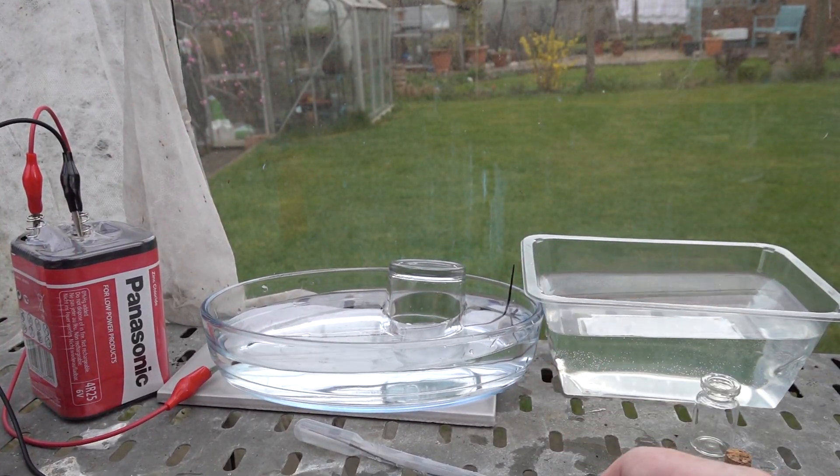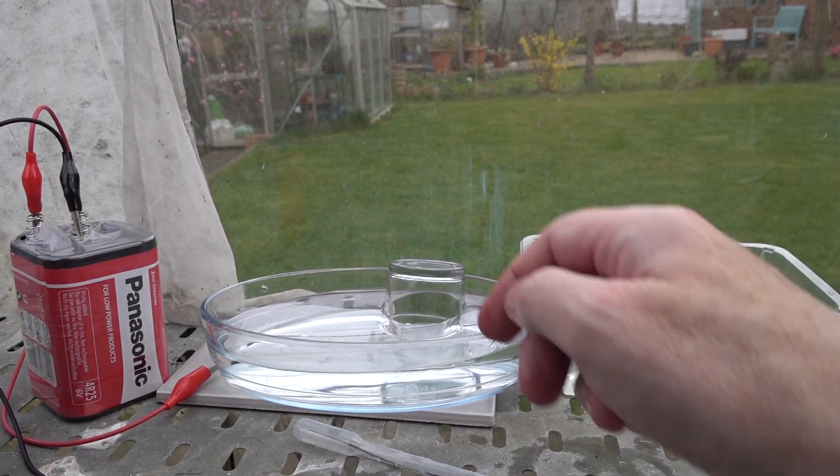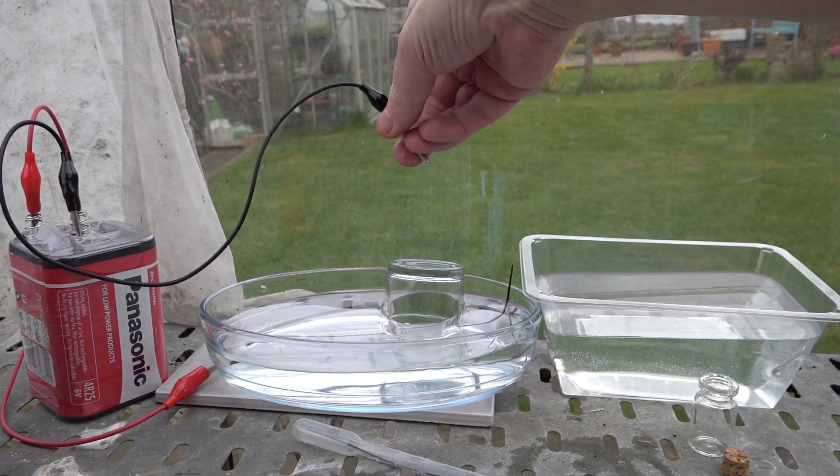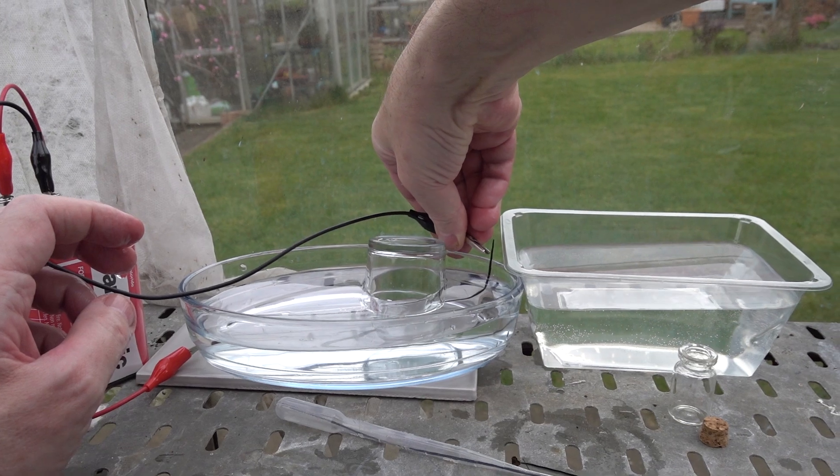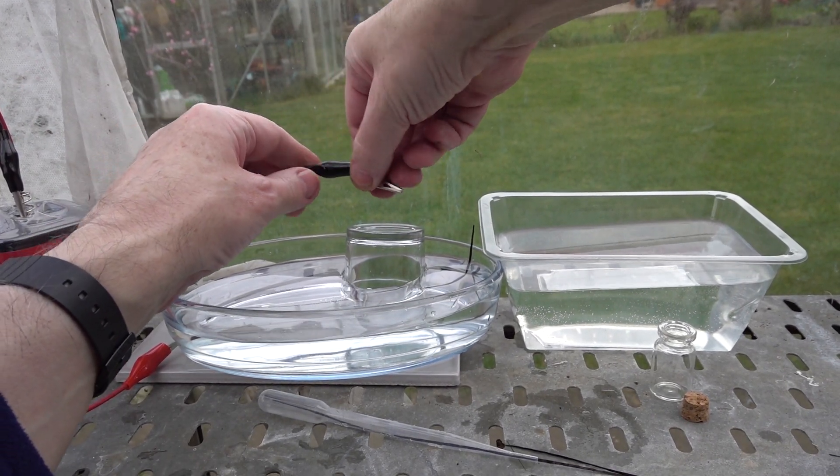All you need to do is connect up the electrode using a standard crocodile clip and a power supply. Here I've got a six volt battery. Away we go, or well, will be when we've got two electrodes set up.